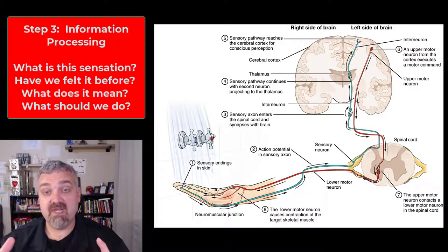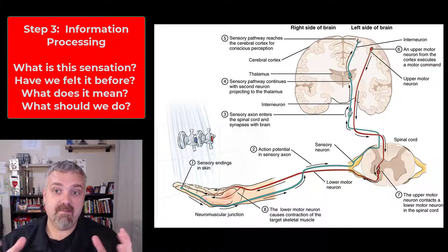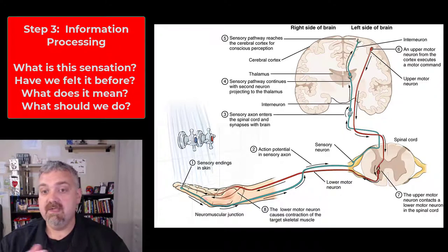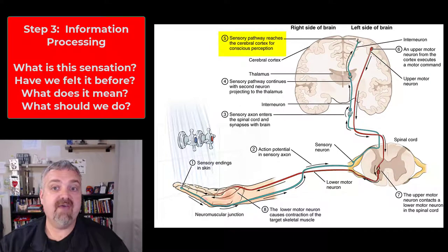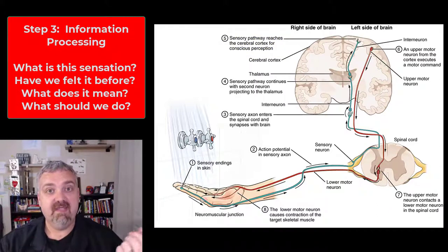Step three is where information is going to be processed. This is what makes reflexes different from our conscious perception like we're talking about here. So you see on the screen there it says the sensory pathway reaches the cerebral cortex for conscious perception. If it feels good, we're going to know it feels good. If it feels bad, too hot or too cold, then we're going to have to respond.